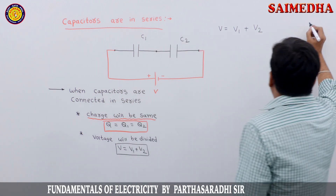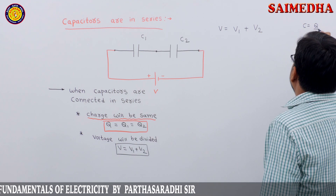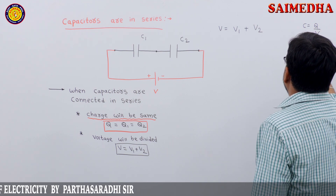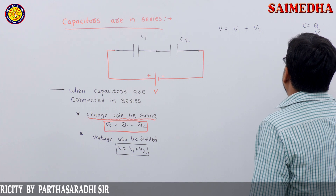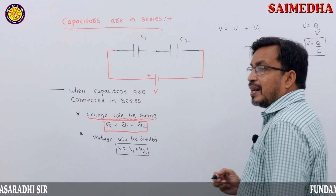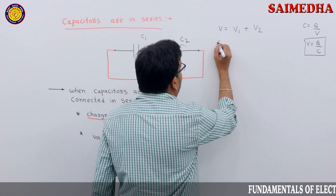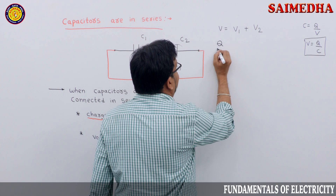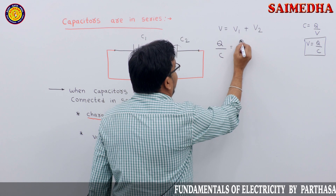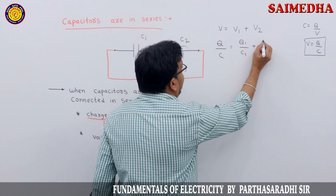From the definition, capacitance C equals Q by V, so V equals Q by C. Therefore V1 equals Q1 by C1, and V2 equals Q2 by C2.